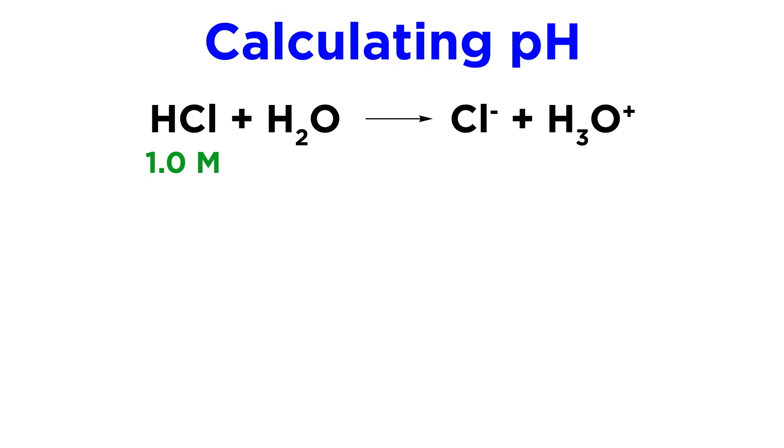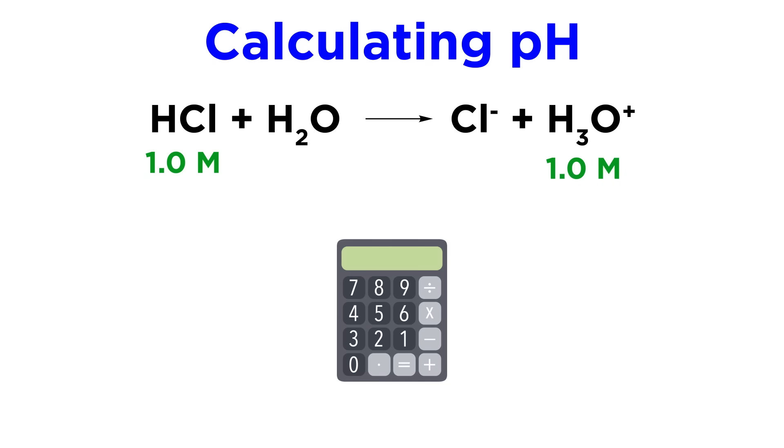So if we are given the concentration of a strong acid, it will be very easy to calculate the pH of the solution it is in, because for a monoprotic acid, the acid concentration will equal the hydronium concentration.